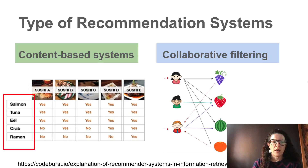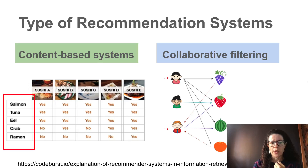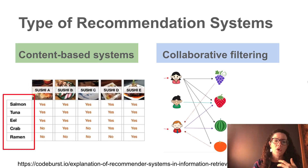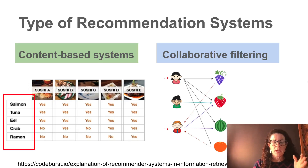Each sushi has features like whether it contains salmon, tuna, eel, crab, or ramen. Suppose I go to the store and buy sushi A for lunch every day for a week, and the store wants to recommend something else I might like. Sushi C has almost the same feature vector as sushi A, so the system computes distances between sushi A and all other sushi options and recommends sushi C because it's closest to sushi A.